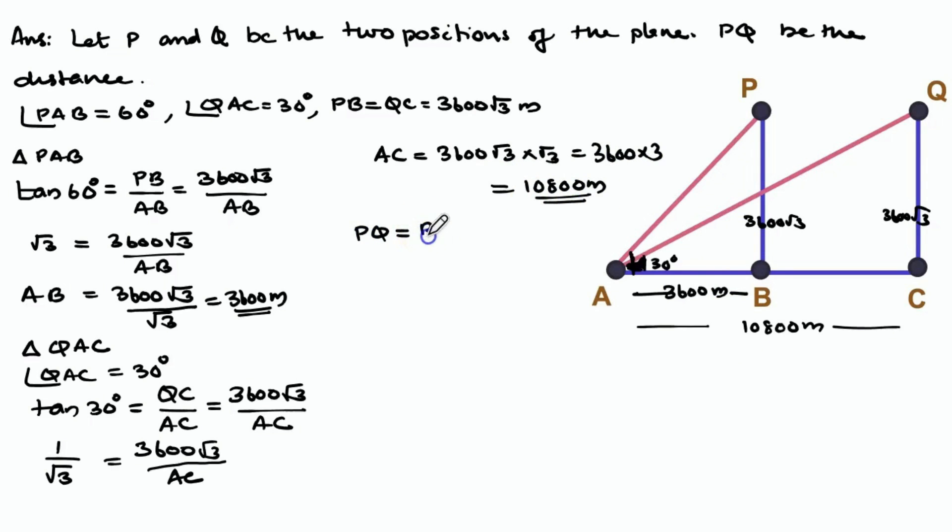Friends, PQ equals BC which is equal to AC minus AB. Equals 10,800 meters minus 3,600 meters. Equals 7,200 meters. The plane travels 7,200 meters in 30 seconds.